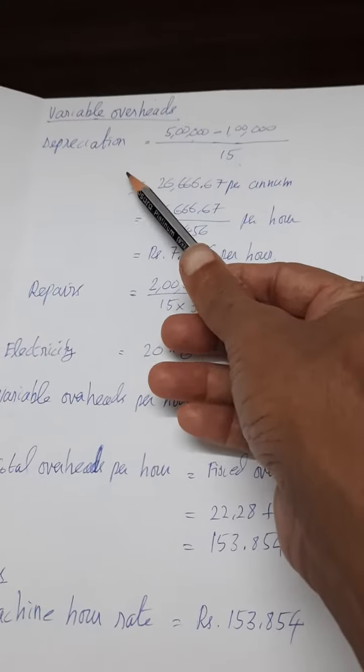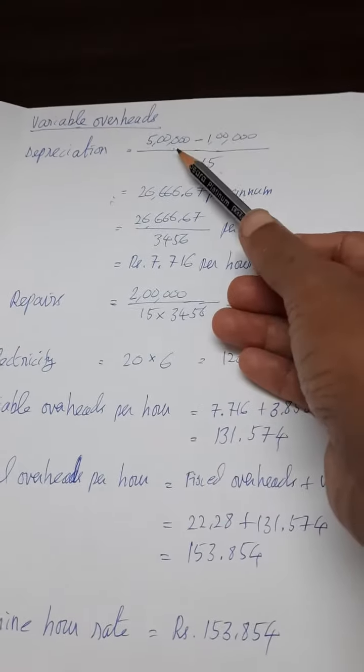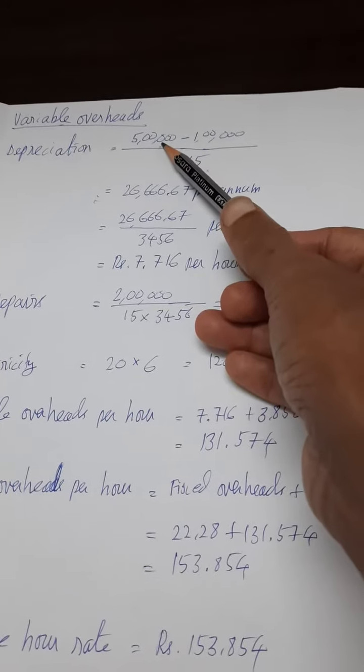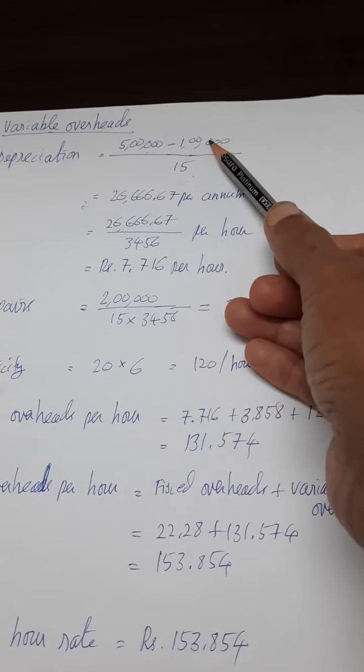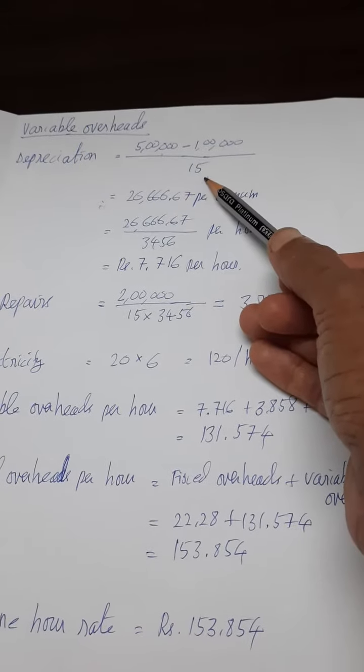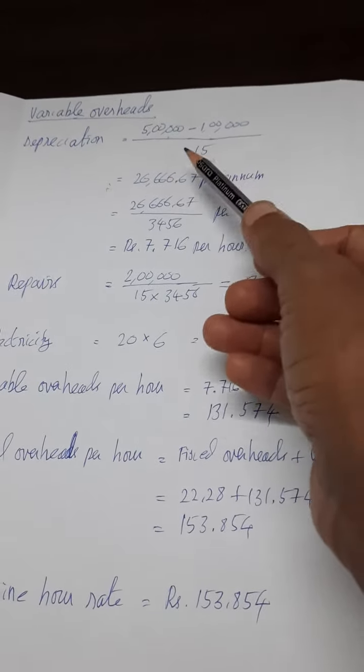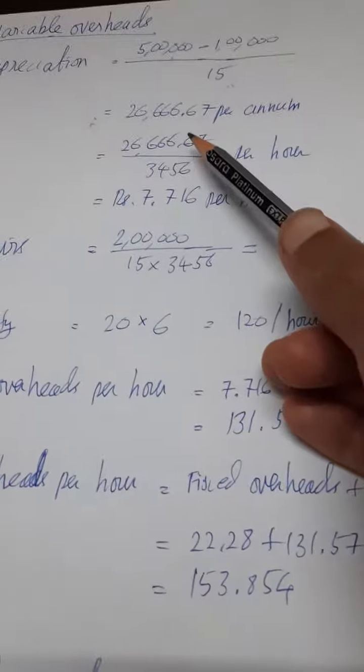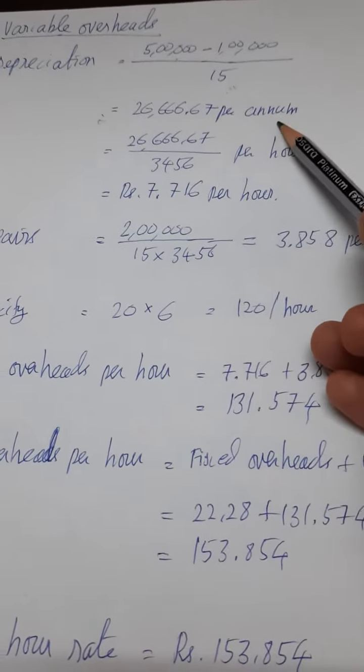How to find the depreciation amount per annum? Initial cost is 5 lakh, the scrap value after 15 years is 1 lakh, the lifespan is 15 years. When you divide this you are getting 26,666 per annum.